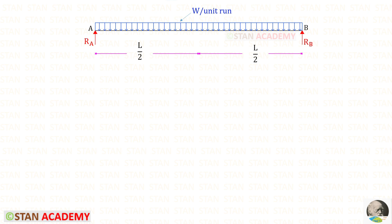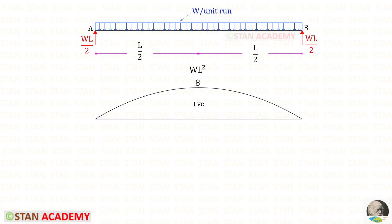Hello everyone. Today we are going to derive the expressions for slope and deflection in this beam. This is a simply supported beam subjected to uniformly distributed load w per unit run for the whole span. The span of the beam is l. The maximum bending moment occurs at the center and it is wl² upon 8, and the moment diagram will be a second degree parabola.